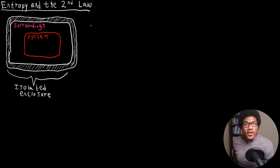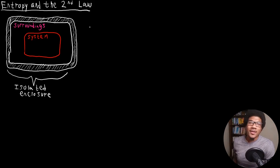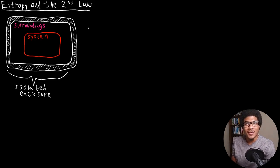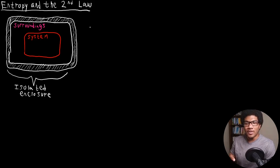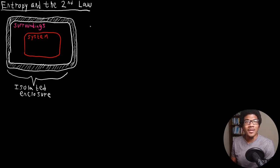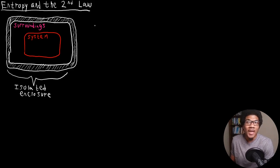In this video, we're going to introduce the concept of entropy and the second law of thermodynamics. In the previous video, we discussed spontaneous changes and noted that for something to be spontaneous, it was maximizing the dispersal of energy. This idea of energy being dispersed in a maximal way gives us a way to predict if something is going to be spontaneous or not, by how much energy it disperses.